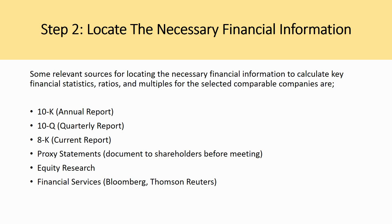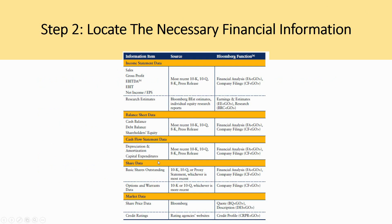Step two: locating the necessary financial information. Relevant sources include the 10-K annual report, the 10-Q quarterly report, the 8-K current report for company performance updates, proxy statements shared with shareholders before shareholder meetings, equity research provided by investment banks, and financial services like Bloomberg and Thomson Reuters, which provide a lot of information. You'll likely be using Bloomberg heavily, while also referring to 10-Ks, 10-Qs, and 8-Ks to understand the current financial position of whatever company you're researching and the comparables.